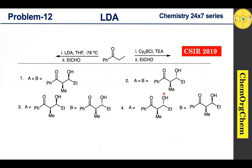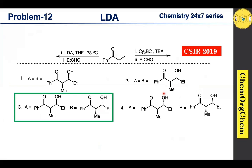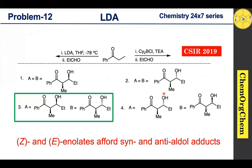Based on our discussion, we can easily eliminate options one, two, and four — option three is the correct answer. To summarize: if you use Z-enolate, you get the syn-aldol product, and if you use E-enolate, you get the anti-aldol product. This rule is useful for predicting which aldol product you will get in your reaction. Thanks for watching — if you enjoyed this content, give us a thumbs up, and if you are new to this channel, don't forget to subscribe. Until next time, bye bye.